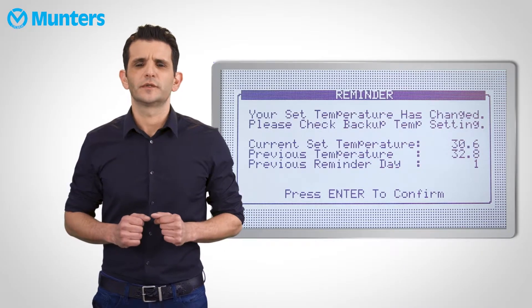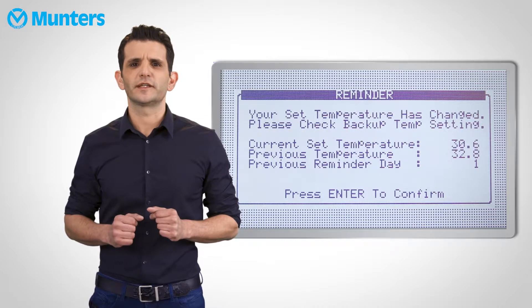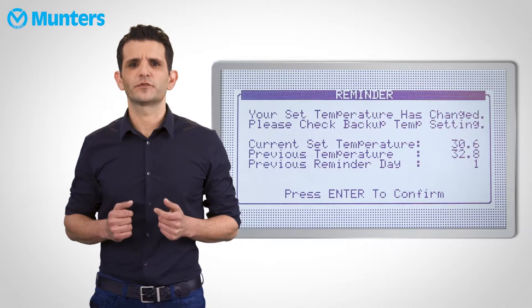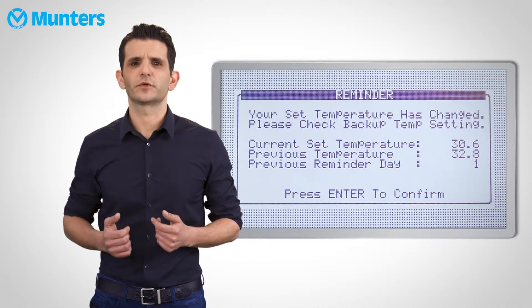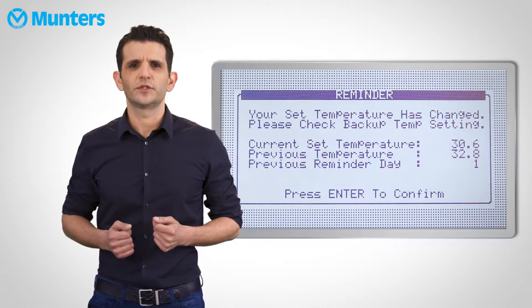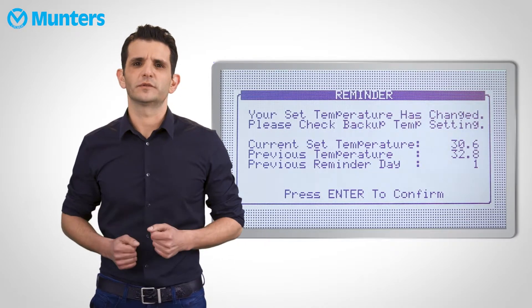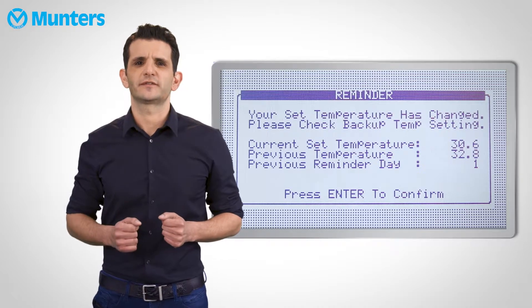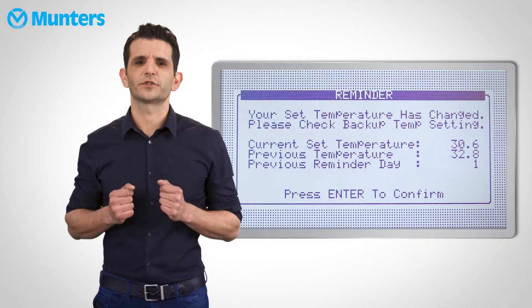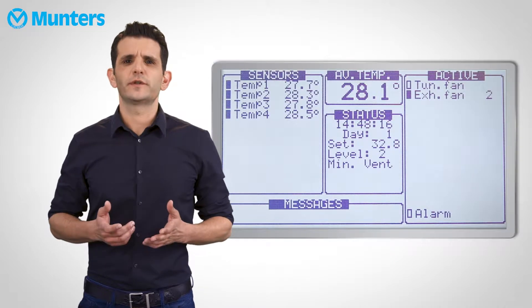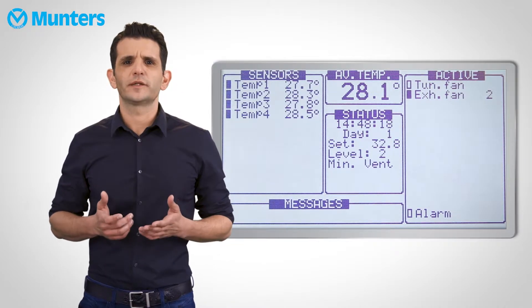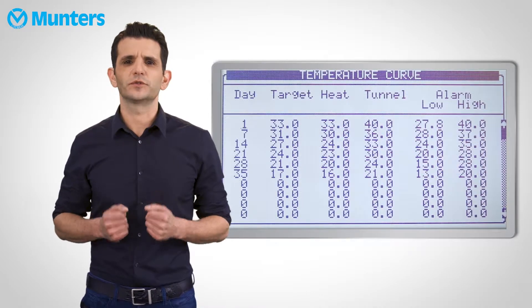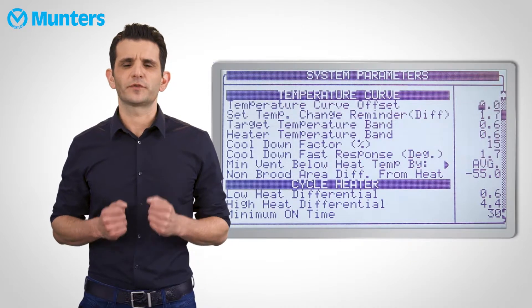Reminders are very important. Say your Platinum controller is connected to manually adjusted backup thermostats. What happens when the temperature curve automatically goes down during the growth cycle? The short answer is you'll need to adjust the thermostats manually. The longer answer is Platinum can remind you to adjust the thermostats so that they are in sync with the controller's temperature curve. If you set a reminder to 2 degrees, a pop-up appears every time the target temperature goes down 2 degrees, reminding you to adjust the backup thermostats.